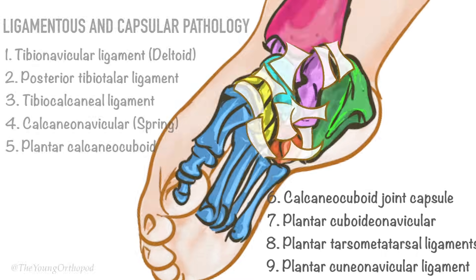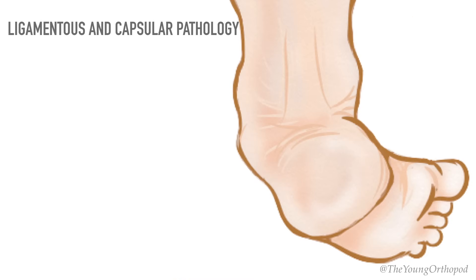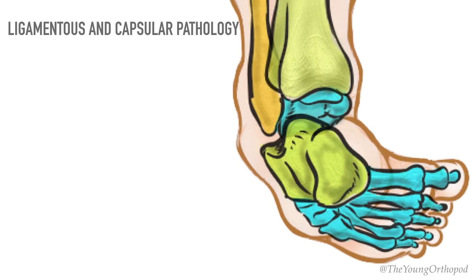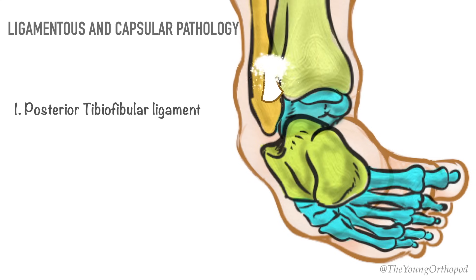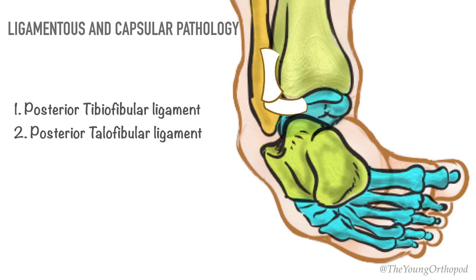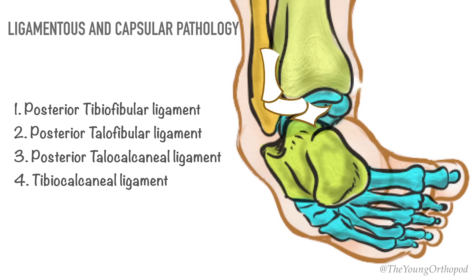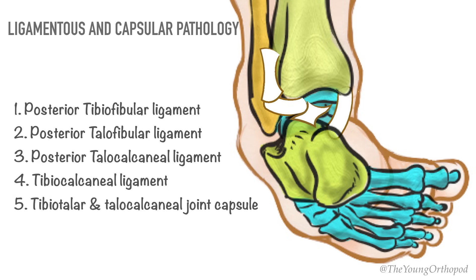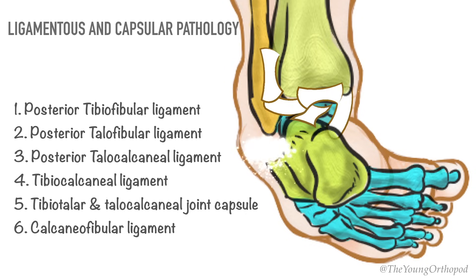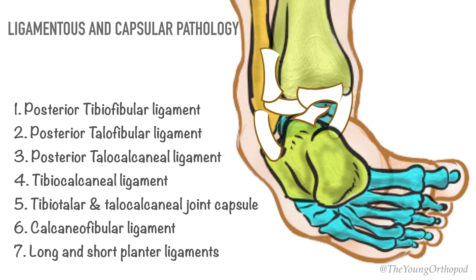On the posterior aspect, you can find contracture of the posterior tibiofibular ligament, the posterior talofibular ligament, the posterior talocalcaneal ligament, the tibiocalcaneal ligament, the tibiotalar and talocalcaneal joint capsule, the calcaneofibular ligament, and the long and short plantar ligaments.